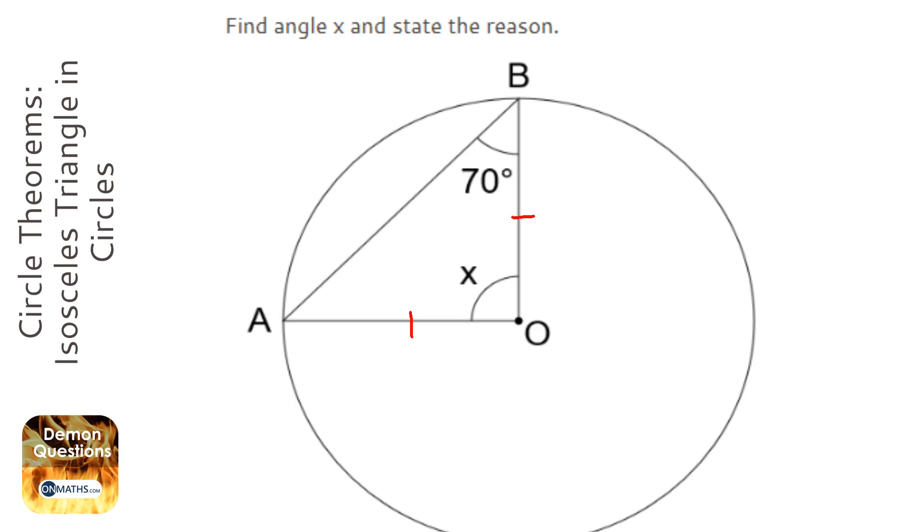Now we all know that with an isosceles triangle, when drawn like this with the two lengths that are the same, then these two bottom angles here are equal. So this angle here is going to be equal to this angle here.